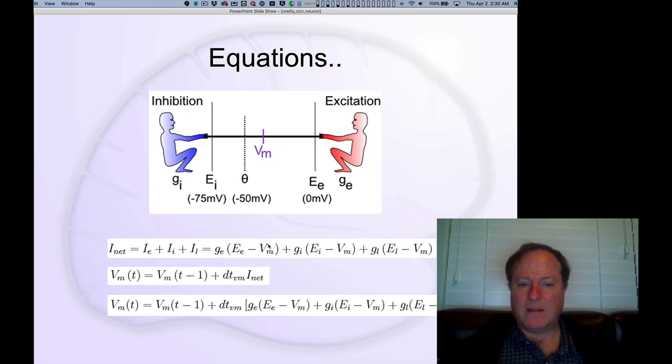Then we've taken the expression for each of those, and we're writing as subscripts the E for excitation, I for inhibition, and L for leak. Then we update the membrane potential.